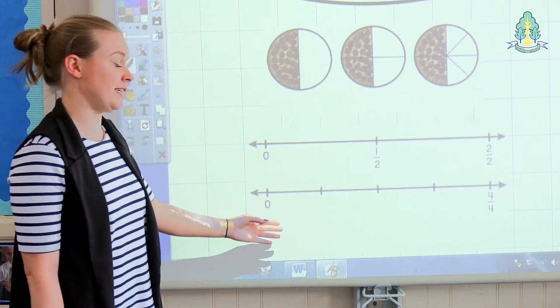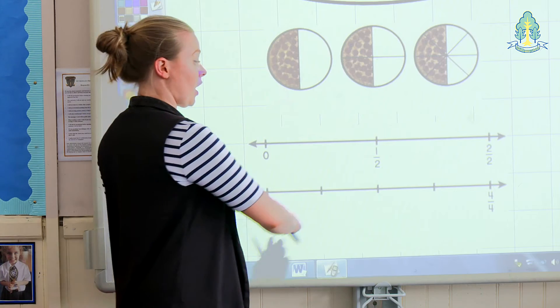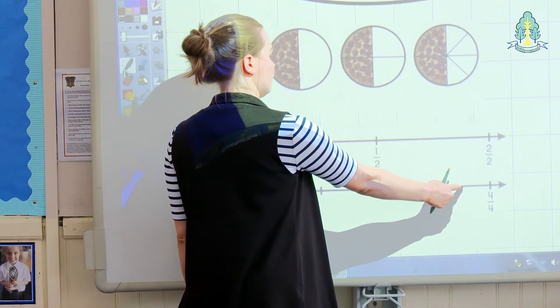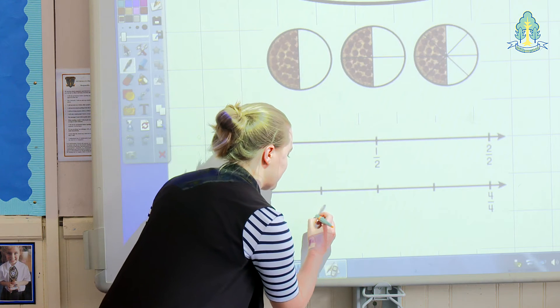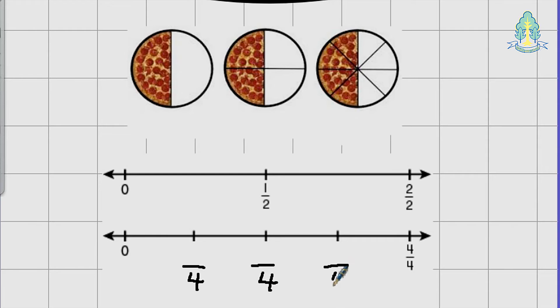Another type of activity is putting fractions onto a number line. Children would have to count the parts of the number line. So in this example, there's 1, 2, 3, 4. That helps them to realise that the denominator of each fraction would be 4 and then they can fill in the numerators easily.